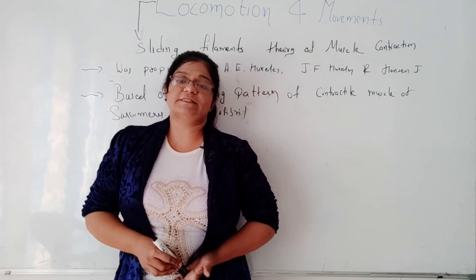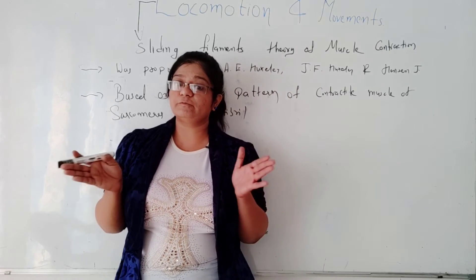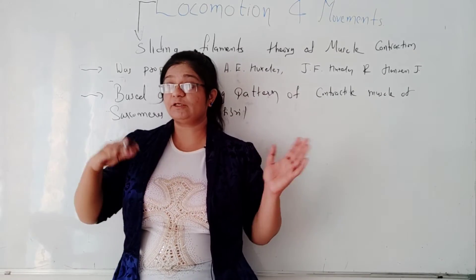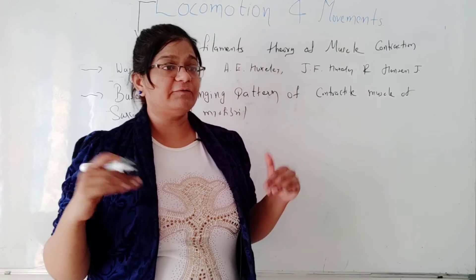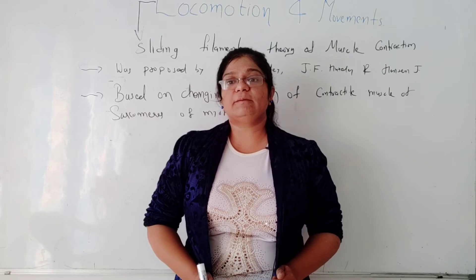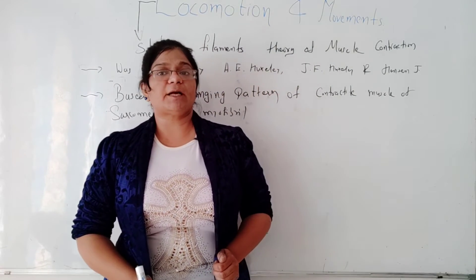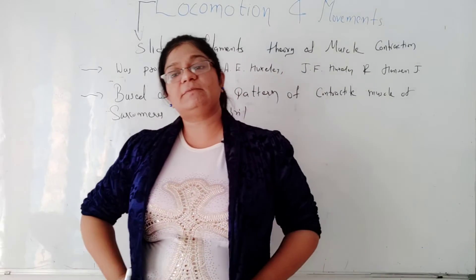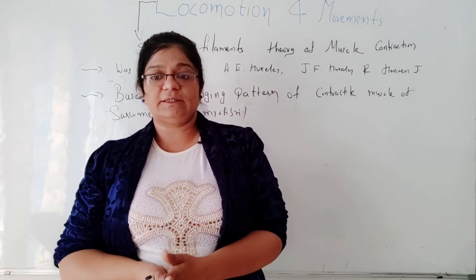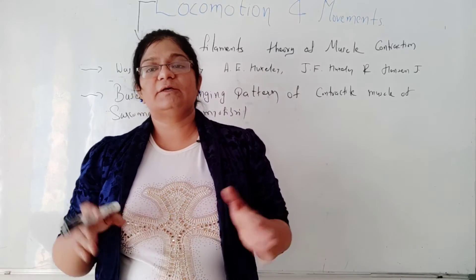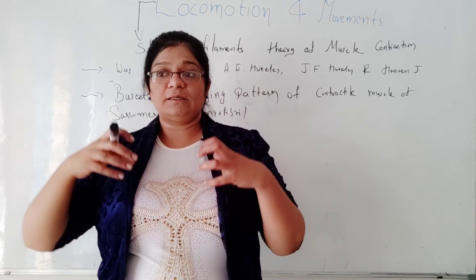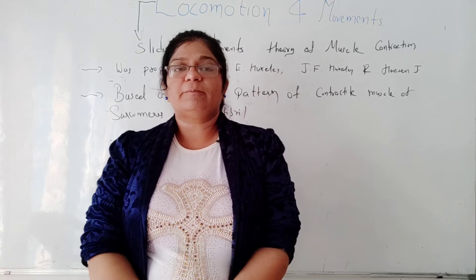This theory explains the process of contraction of muscles, during which thin filaments slide over thick filaments. We have learned about two different kinds of bands: A band and I band. In the A band, we have two types of contractile proteins — actin protein and myosin protein — whereas in the I band, only actin protein is present. When these thin and thick proteins overlap, the sliding of thick filament over thin filament leads to the shortening of our myofibrils.